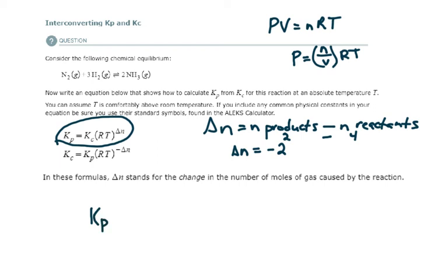So what is Kp equal to? Kp is equal to Kc, whatever that may be, times R, which is 0.0821,